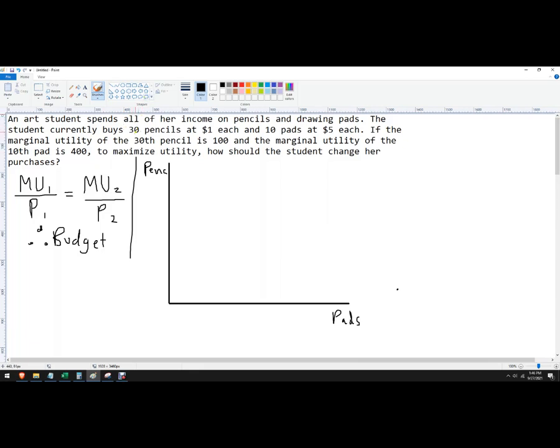So currently we're buying, first we want to know the income of this person, or the amount of money they're willing to spend on pads and pencils. They're currently spending on pencils $30 because it's 30 times one.